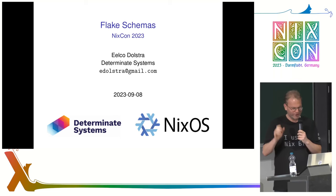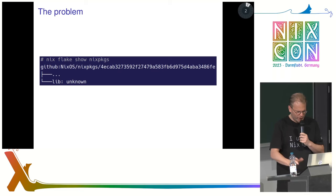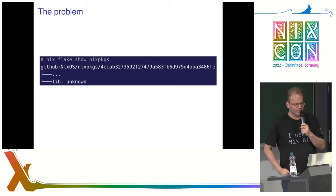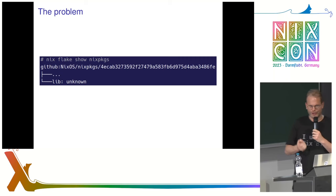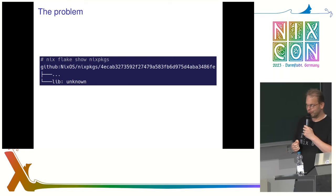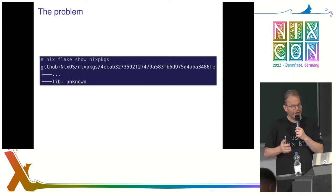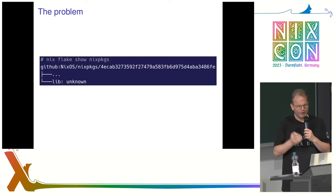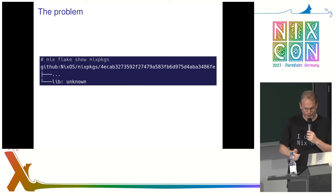This is about another new feature in flakes - something really bleeding edge I've worked on over the last month and a half or so, called flake schemas. It strives to solve this problem: if you run `nix flake show` on something like nixpkgs, it shows packages and legacy packages and NixOS modules, but then it says 'lib unknown', which isn't very nice. And if you're using home manager, `nix flake show` doesn't know anything about home manager configurations or modules - you're out of luck. Flake schemas are supposed to solve that problem.